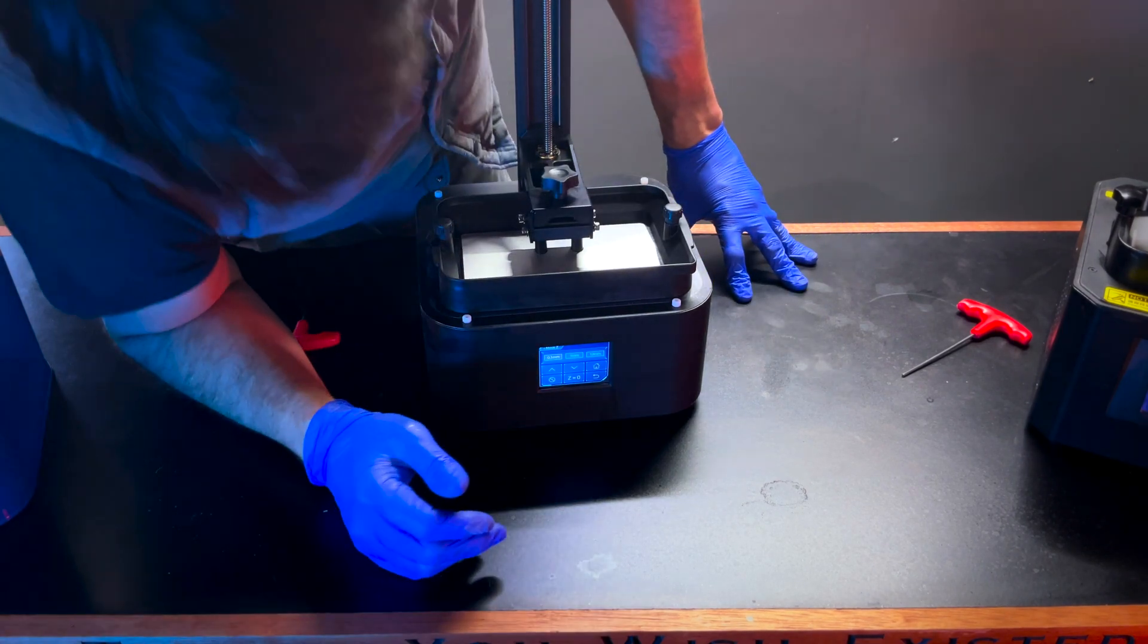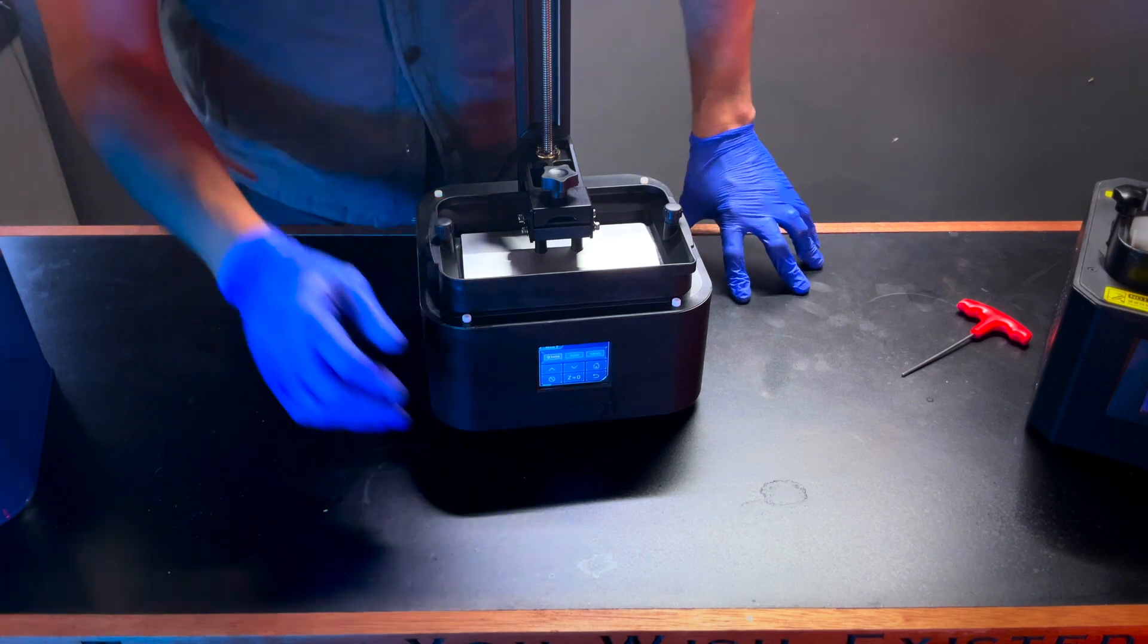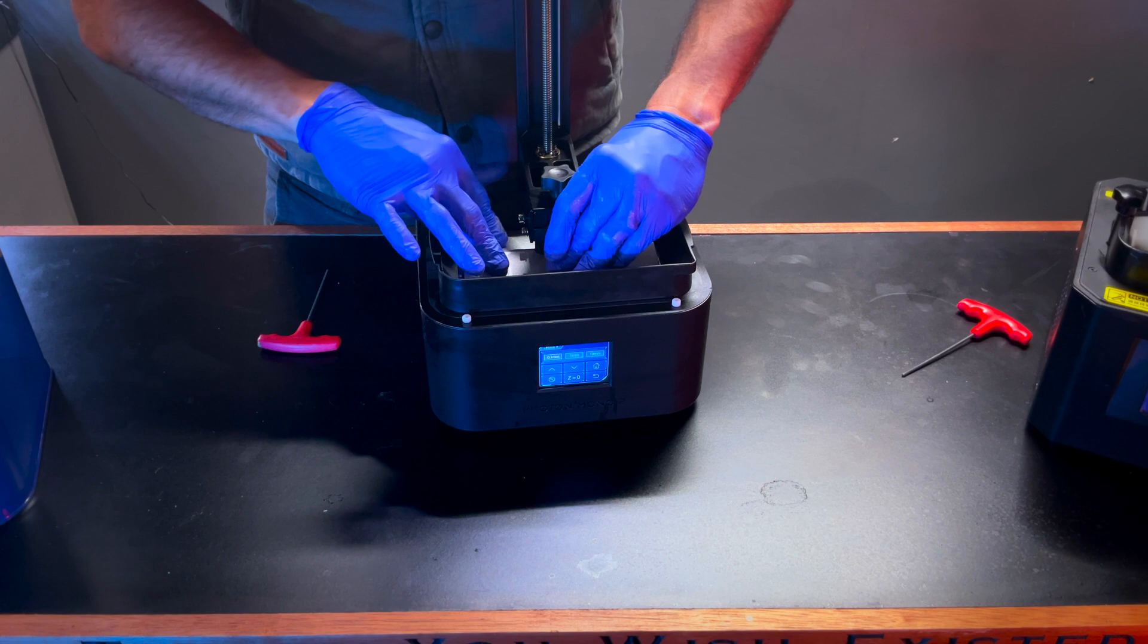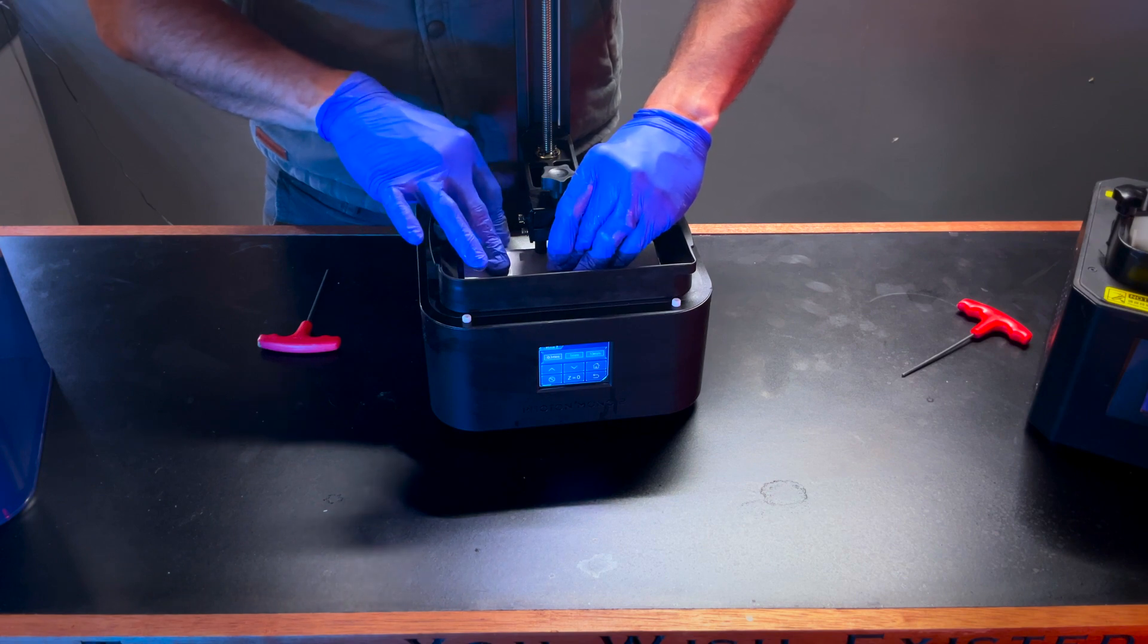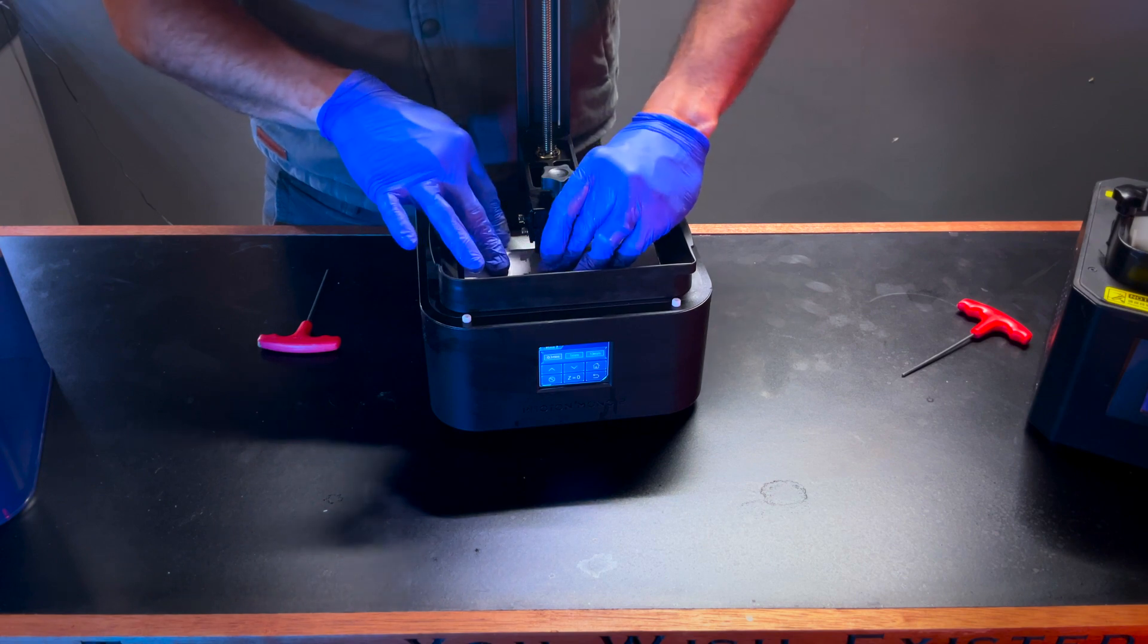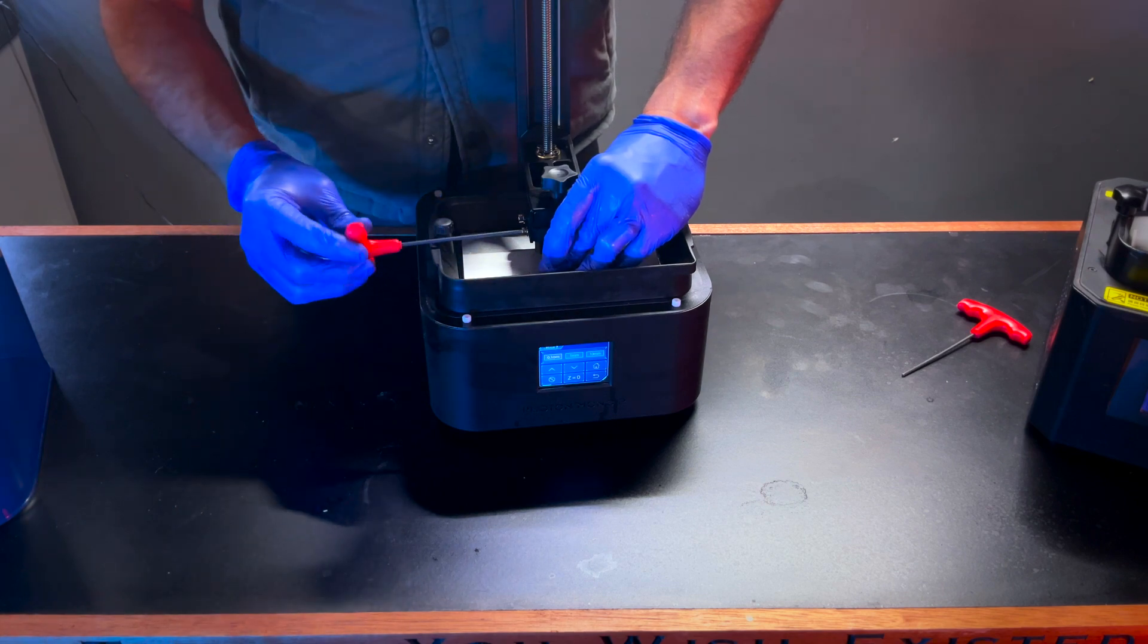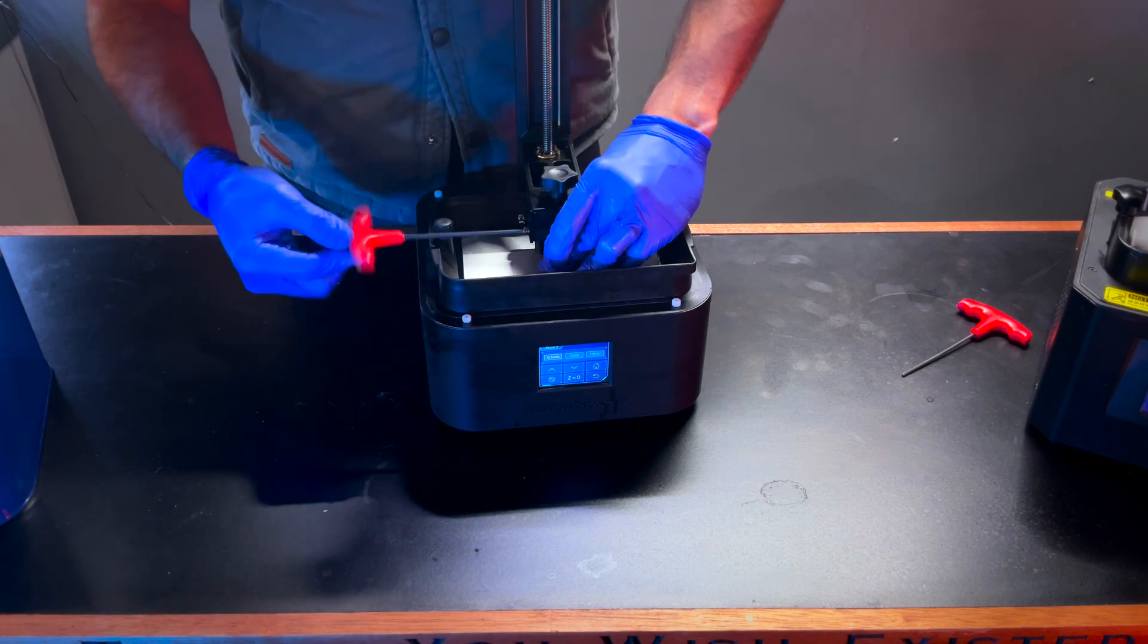Once your printer has homed itself, the next step is going to be to apply gentle downward pressure, not firm. You don't want to damage your screen. Hold gentle downward pressure. Take your Allen key and go ahead and tighten your four screws.